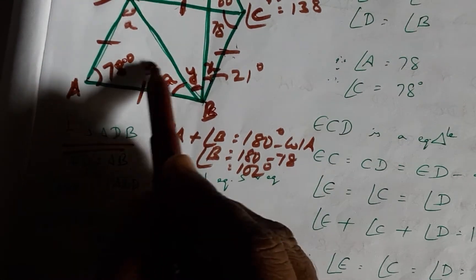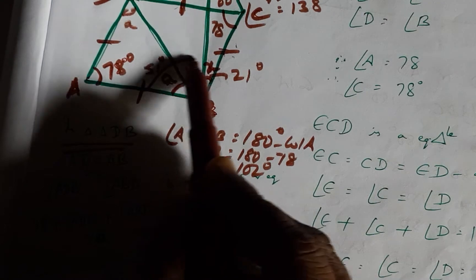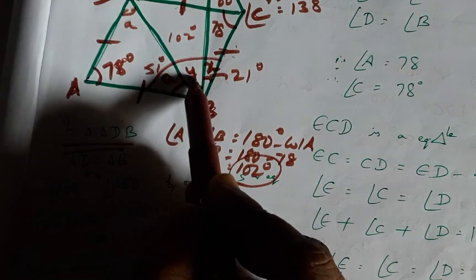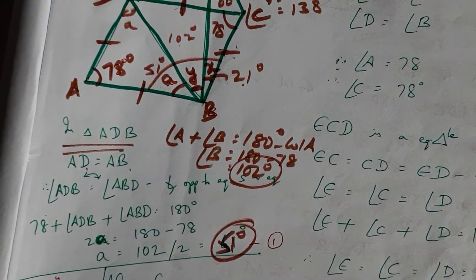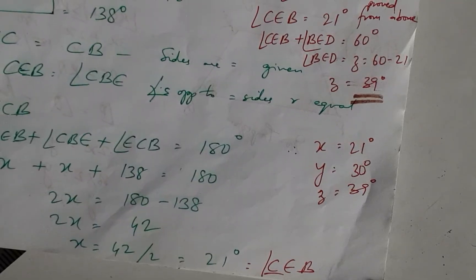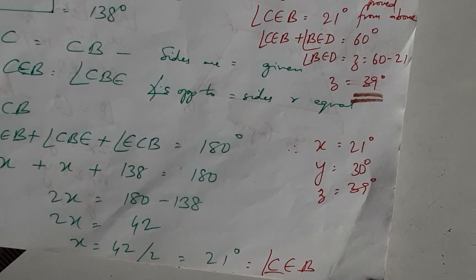Now, we have A as 51, X as 21, and the whole angle has been arrived at as 102 degrees. Therefore, Y will be 102 minus 51 plus 21, which comes to 30 degrees. Therefore, X is 21, Y is 30, and Z is 39 degrees.